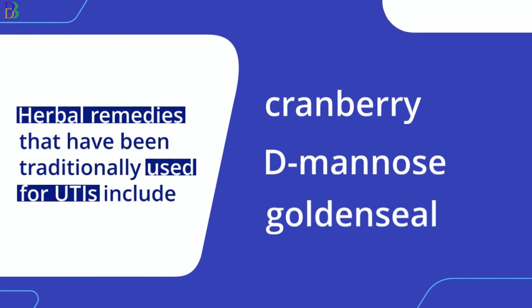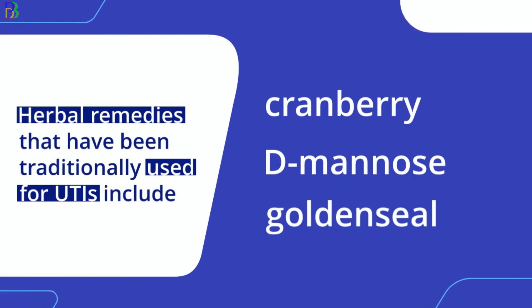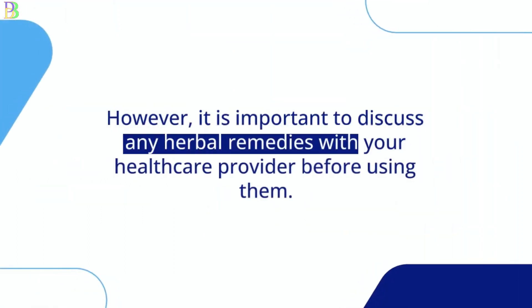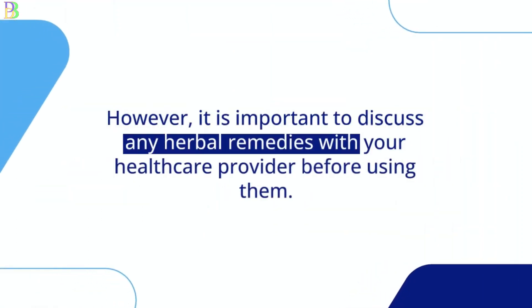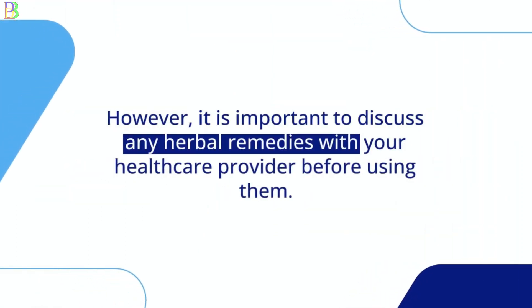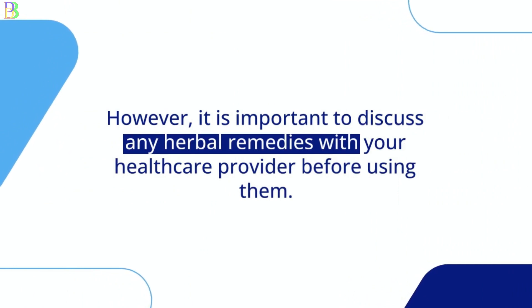Herbal remedies that have been traditionally used for UTIs include cranberry, D-mannose, and goldenseal. However, it is important to discuss any herbal remedies with your healthcare provider before using them.